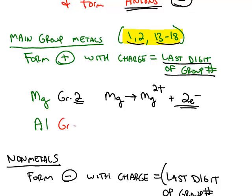Aluminum is also a main group metal. It's in group number 13. The last digit of 13 is 3. So an aluminum atom will tend to lose 3 electrons and form a positive 3 cation.